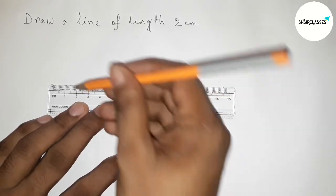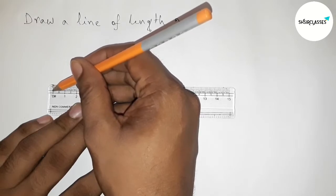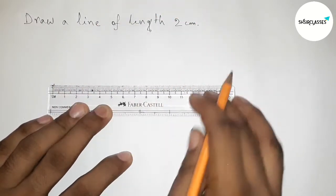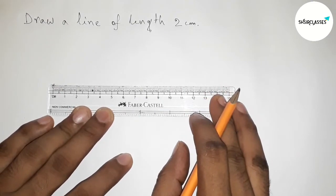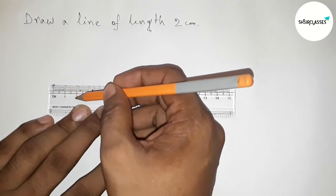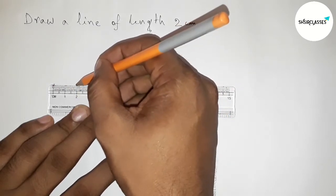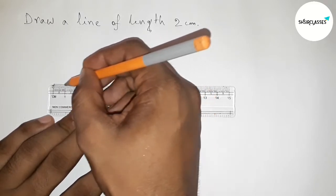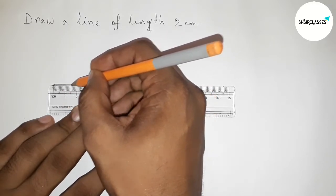Now measuring the length. This is starting 0, so marking here. Now counting the length, so from this, this is 1 and this one 2. So marking here and this is 2 centimeter length and joining this.